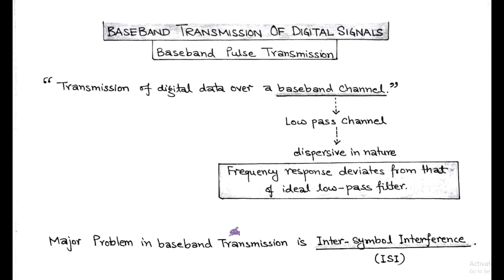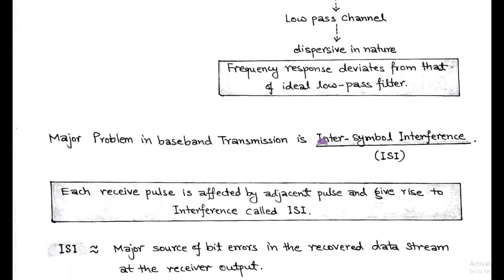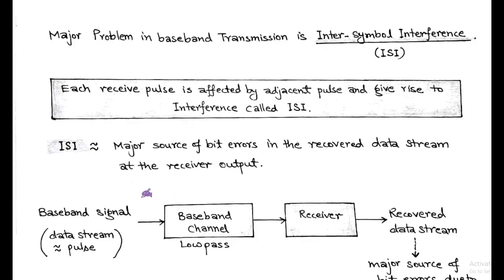There is a major problem in Baseband Transmission called Inter-Symbol Interference, or ISI. This Inter-Symbol Interference occurs when each received pulse is affected by its adjacent pulse, giving rise to interference called ISI. In Baseband Transmission of Digital Signals, ISI is a major source of bit errors in the recovered data stream at the receiver output.